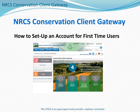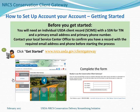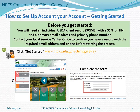How to set up an account for first-time users of the NRCS Conservation Client Gateway. There are three steps to setting up your account, but before you get started, you need to ensure that you have an individual USDA client record, or SCIMS record, with a social security number or tax identification number. That record also needs to have a primary email address and a phone number. If you're not sure, contact your local service center office and they can help you.